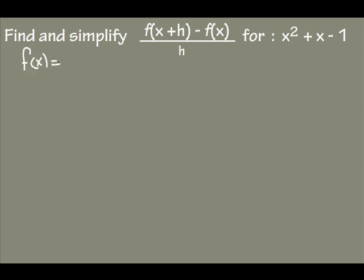So let's write out the original function: f of x equals x squared plus x minus 1. When I look at the difference quotient, I see that I have f of x plus h, so I need to figure that out next.